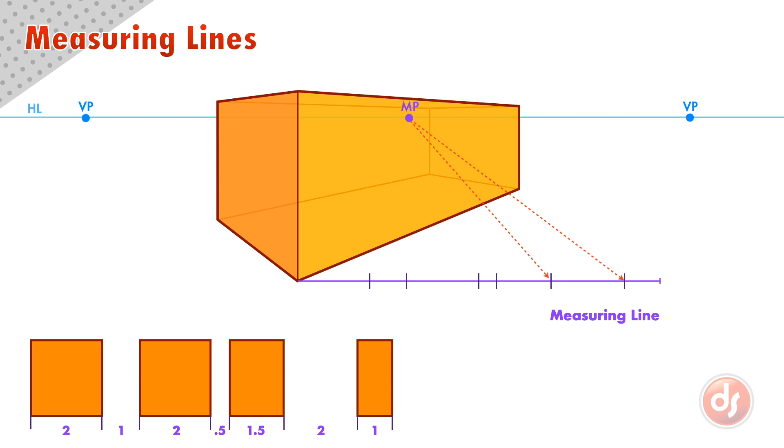We then connect lines from our measuring point to all the divisions on our measuring line. When we do this, the lines will go through the front plane of our box. The points where those lines cross the bottom of the box plane is the measuring line applied into perspective.